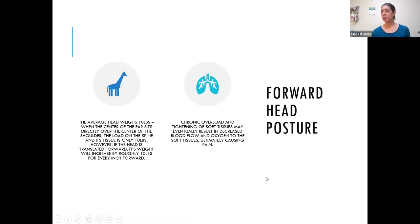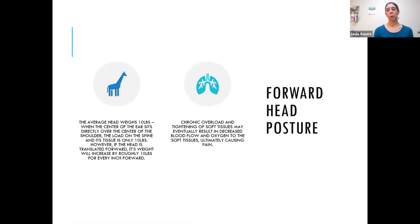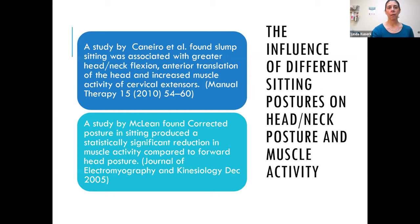Now let's talk about the cervical spine and forward head posture. An average head weighs about 10 pounds, but for each inch that head goes forward, it's about another 10 pounds of force on the muscles in the neck. The more your head goes forward, the harder your muscles have to work to hold things up. When muscles are chronically overloaded, you see a tightening of soft tissue which causes decreased blood flow, and that can lead to pain.